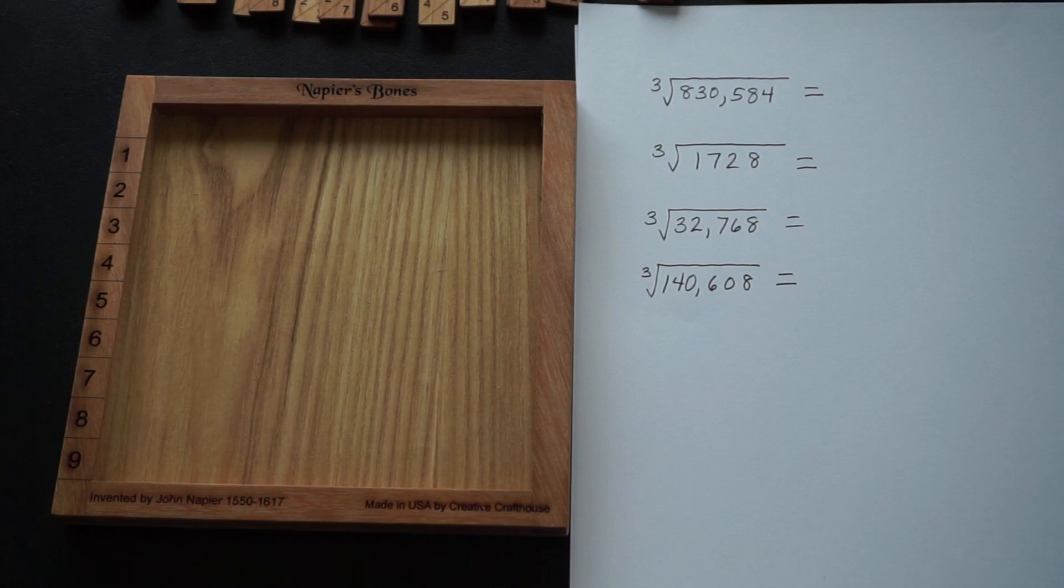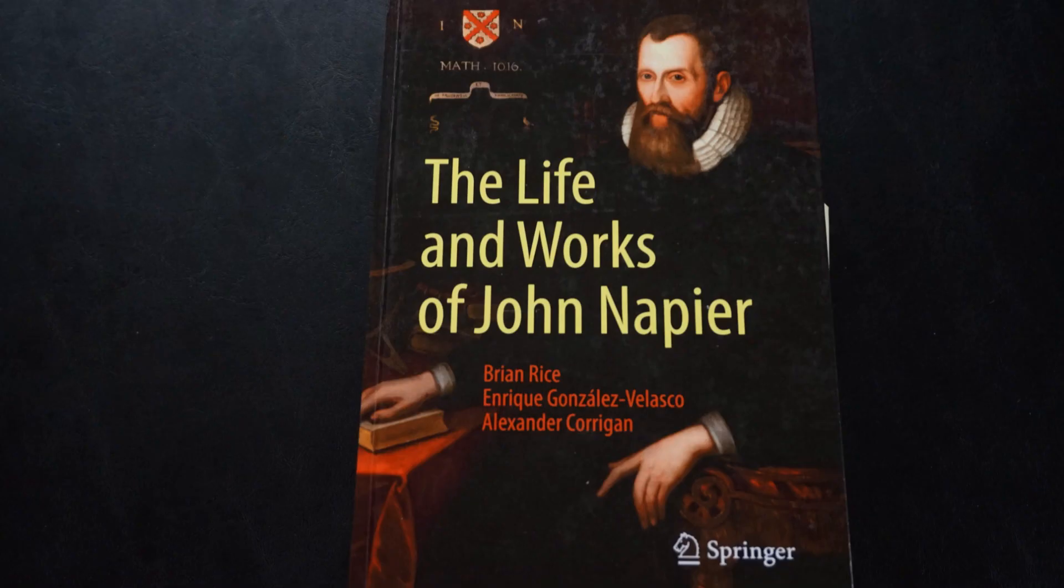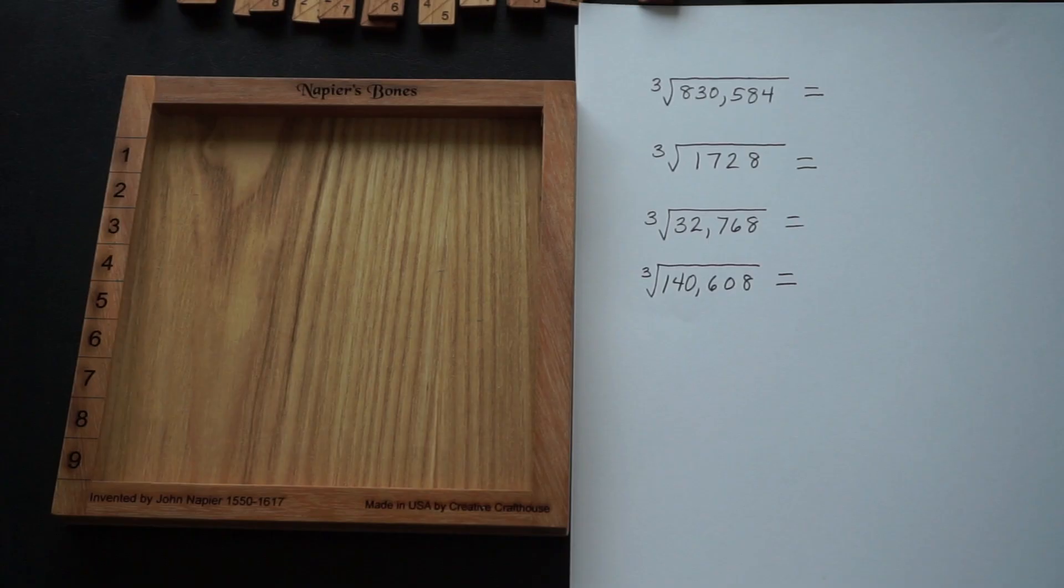If you're interested in reading about the rods, there is an English translation of the Rabdology in the book The Life and Works of John Napier by Rice, Gonzalez-Velasco, and Corrigan. So I'm going to work out four cube root problems using the method exactly as Napier used it. I'll be using the four problems that I've already worked out in earlier videos so that you can compare and contrast.